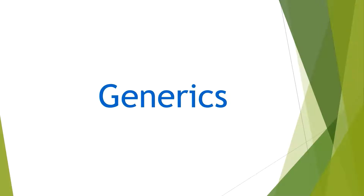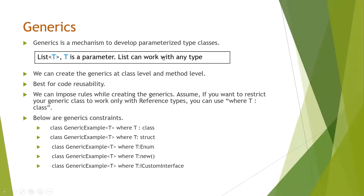Hello all, welcome to my YouTube channel. In this video, let us have an understanding of the generics concepts in .NET. So what are generics? Generics is a mechanism to develop parameterized type classes. If something is not specific, that is generic. If you already know some concepts of .NET, you should know about List<T>. The same List class works with any type of object — you can store a list of persons, employees, anything. This is called a parameterized generic type.